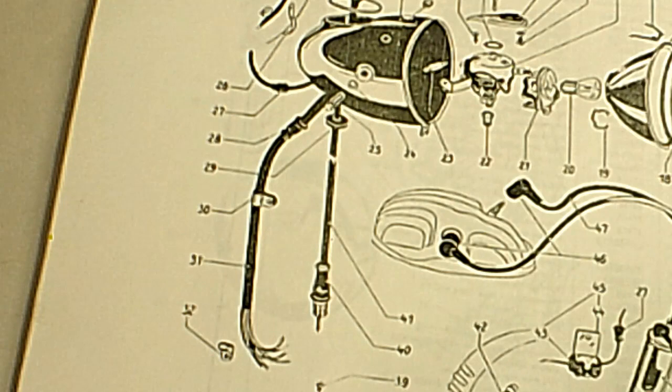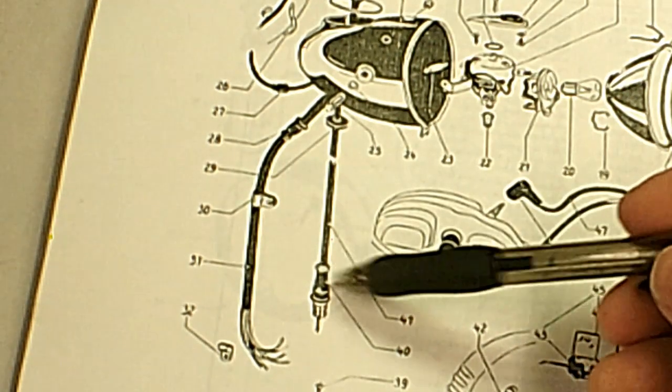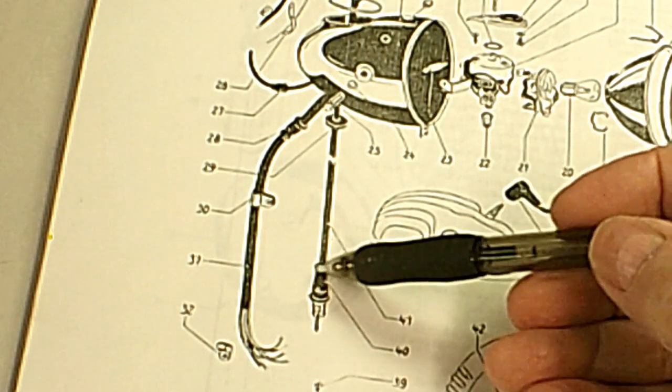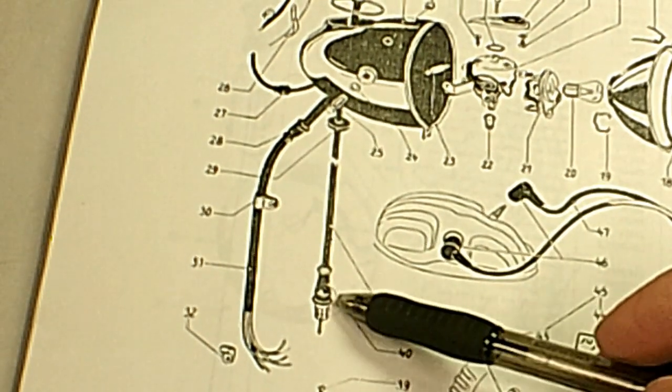The next thing I'm working on is I got the speedometer cable through the frame, but obviously you can't do it with this cover that was on there. There's a little rubber cover where it fits on the engine.